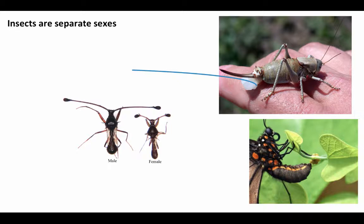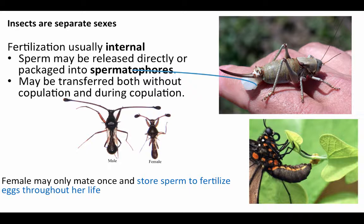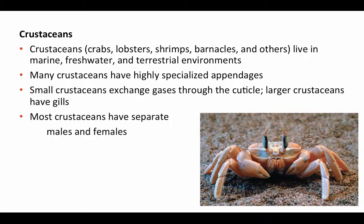Insects have separate sexes and reproduce sexually for the most part. Fertilization is usually internal, with sperm deposited directly into a reproductive tract, or delivered externally in structures called spermatophores, which the female picks up and stores in a specialized organ connected to the reproductive tract. This means sperm can be transferred without copulation. Females can store sperm for multiple rounds of egg fertilization — in some species, a female may mate only once in her entire life and store enough sperm to fertilize all her eggs.